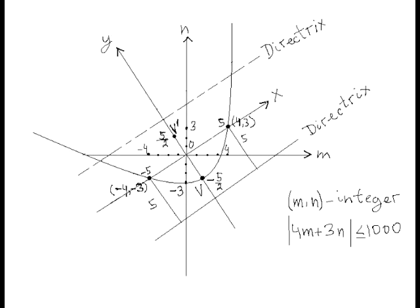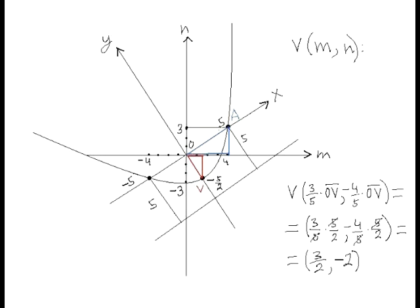We can see that the point with M, N coordinates has X, Y coordinates. The X, Y coordinates of vertex V are 0 and −5/2. The corresponding M, N coordinates of vertex V are easy to calculate since they are the lengths of two sides of a right triangle similar to the right triangle formed by the point with M, N coordinates. Prove it as a home exercise. So coordinate M of vertex V is equal to 3/5 of the hypotenuse of that triangle, and coordinate N of that point is equal to −4/5 of the same hypotenuse, since this triangle is similar to the 3-4-5 triangle. Thus, the M, N coordinates of vertex V are 3/2 and −2.